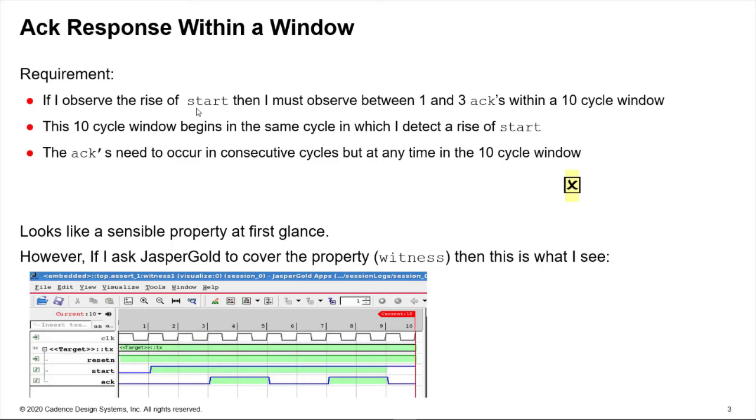The example we've just seen was fairly simple to understand because the sequences were a fixed length. Now you have to be particularly careful using within if you have a variable length sequence or indeed a sequence which could be of an infinite length.